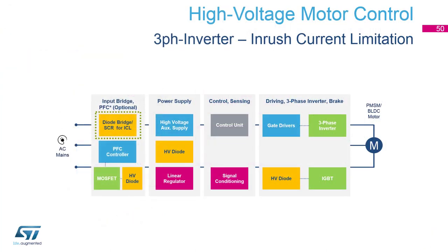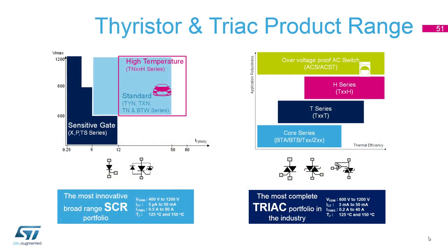Let's move on to SCRs and triacs for in-rush current limitation. Here we see an overview of our extended and versatile portfolio of SCRs and triacs. For in-rush current limitation in motor control applications we recommend our SCRs from the TN series, with a high current range of up to 80 A and a high temperature range of up to 150°C. In other cases, the use of triacs can be suitable too. ST offers a wide portfolio of triacs up to 40 A with a small trigger current of less than 3 mA.